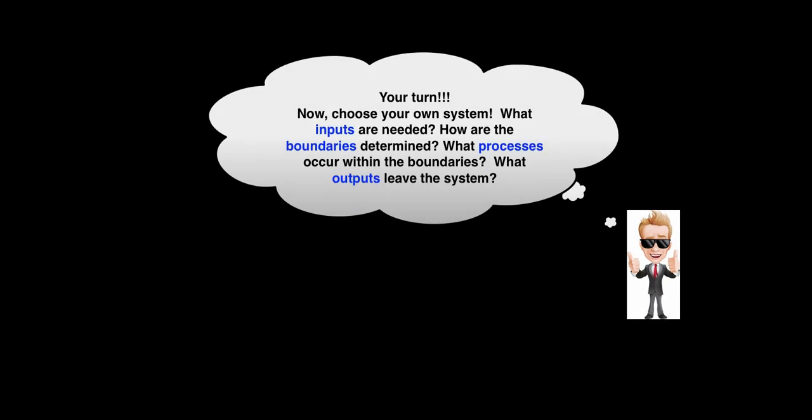Alright, it's your turn. Now choose your own system. What inputs are needed? How are the boundaries for your system determined? What processes occur within those boundaries? And lastly, what outputs leave the system you're considering?